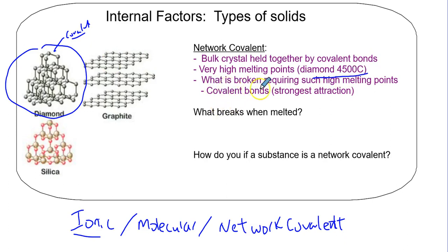Because this is our strongest bond, it has extremely high melting points like diamond at 4500 degrees. What is broken requiring such high melting points? The answer is a covalent bond. Every time we melt something, something is broken. What breaks when melted? A covalent bond.